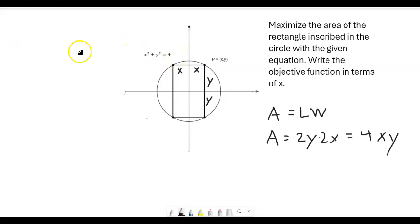But let's go ahead and solve for y. So the first thing I can do is just subtract an x squared from both sides of that. And I'm going to end up getting y squared is equal to 4 minus x squared.